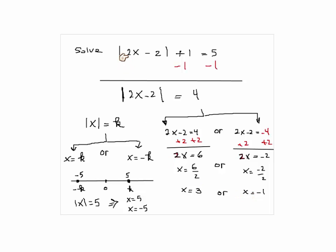And for negative 1, 2 times negative 1 is negative 2. Negative 2 minus 2 is negative 4. Absolute value of negative 4 equals 4, 4 plus 1 equals 5. So that's how you can check your answer.